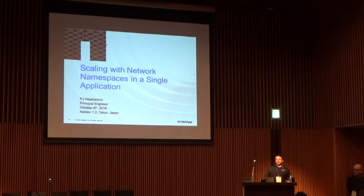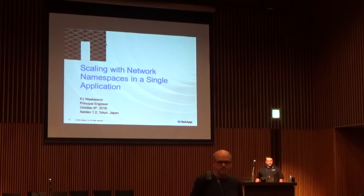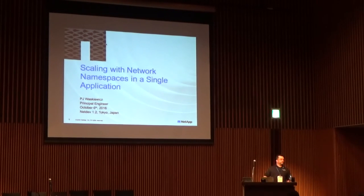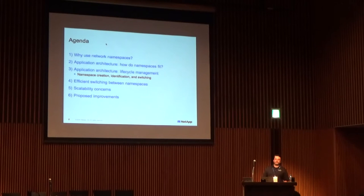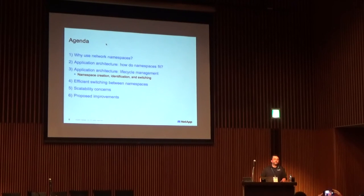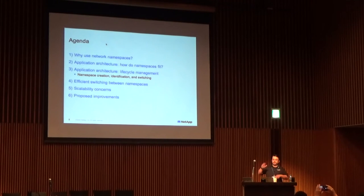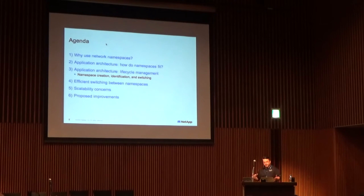We'll talk about some techniques for scaling and some areas that we found might be good areas to focus on within the community to try and improve the API and some of the plumbing exposed by network namespaces. If anyone has questions please feel free to ask — just raise your hand so we can get a mic to you. The obligatory agenda slide: I'm going to cover why we got to using network namespaces. For the sake of time I cut some of that down but there are examples in the paper.